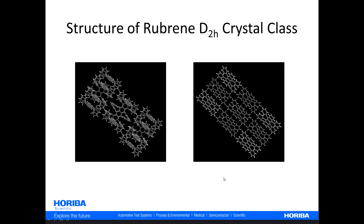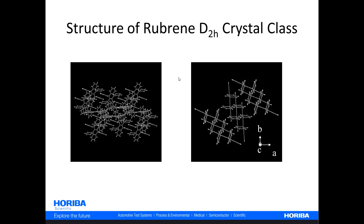Here are two diagrams of rubrene in the D2H crystal class — they're essentially the same crystal structure, but just oriented differently. If you envision yourself as a laser beam heading towards this crystal of rubrene, then depending on how it's oriented, you can anticipate the different interactions of the vibrational modes and the phonons with the incident electric field. This is the same crystal structure D2H, only at different orientations relative to your field of view or the incident beam.